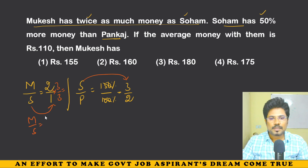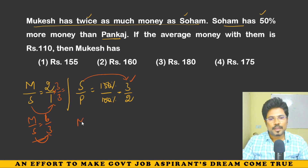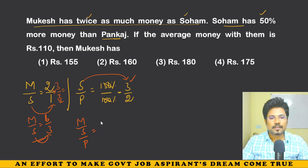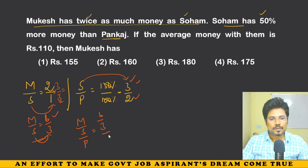Mukesh to Soham is equal to 6 to 3 — here Soham is 3. Then Mukesh to Soham to Pankaj: Soham is 3 here and 3 there, so Soham equals 3. Mukesh is 6, Soham is 3, and Pankaj is 2. So the ratio is 6:3:2.